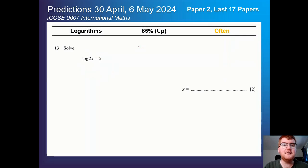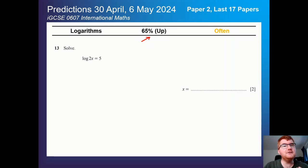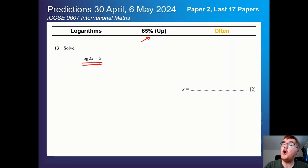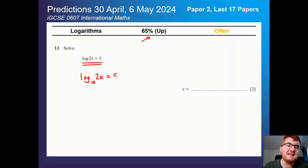On to logarithms, which is up at 65% — it came up a lot in the recent papers and they can twist this around quite a bit. A typical example question on paper 2 requires you to realise that without a base mentioned, you actually have a base of 10, which will help you work out that kind of question.